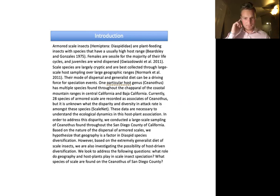They usually have a very high host range of plants. Females are sedentary for the majority of their lives, and the juveniles are dispersed via the wind. Both their generalist diet and their mode of dispersal can be contributing factors to speciation events, but which one is it? A particular host genus, Ceanothus, has multiple species found throughout the mountain ranges of California.